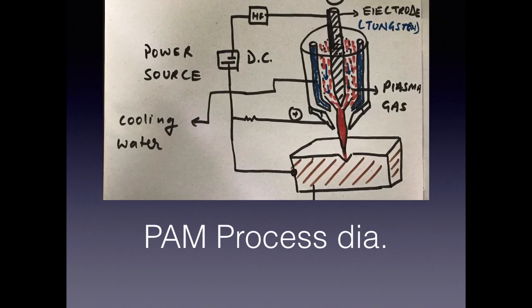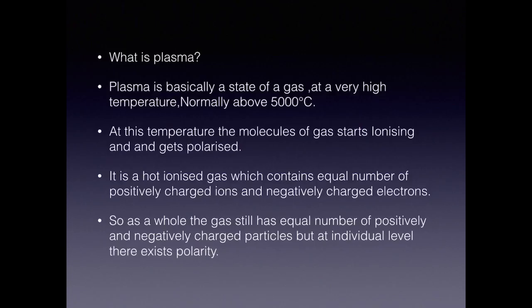We have seen how the arc is generated. The positive and negative terminals and the plasma arc gun induce the spark, inducing a temperature rise, and the potential difference drives the arc to the workpiece. To summarize: plasma is any gas which is normally above 5000 degrees centigrade. At this temperature the gas molecules start ionizing. As a whole it is neutral, but it is made of positive and negative particles.